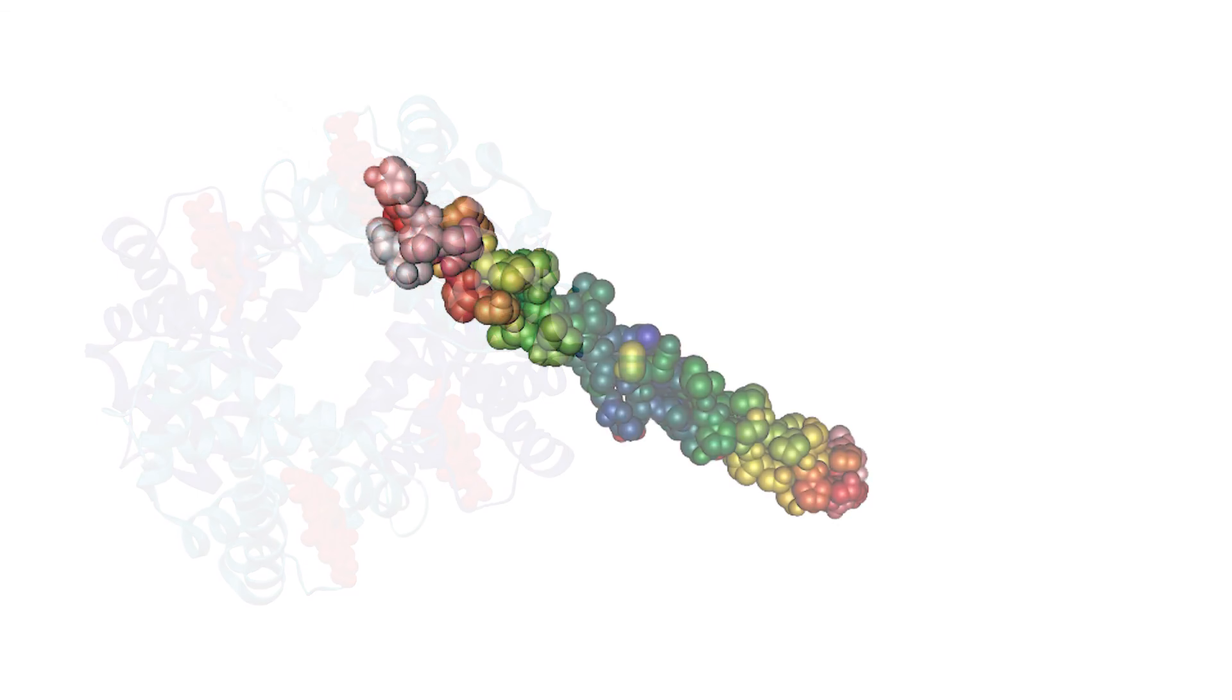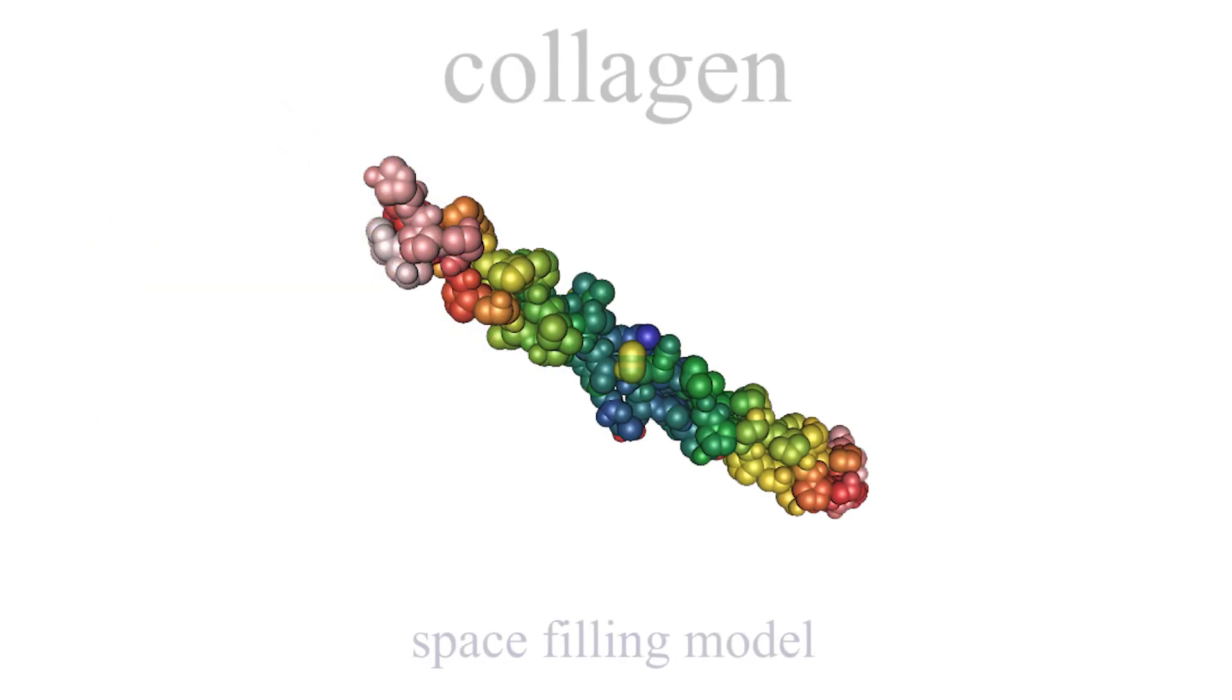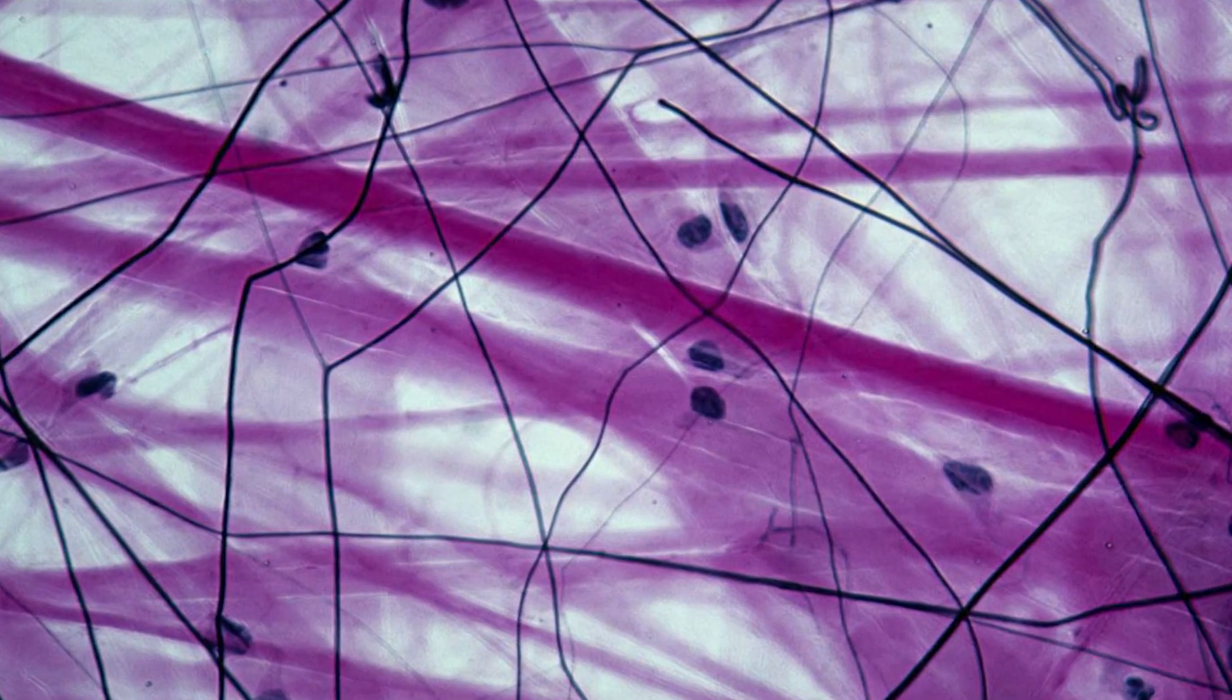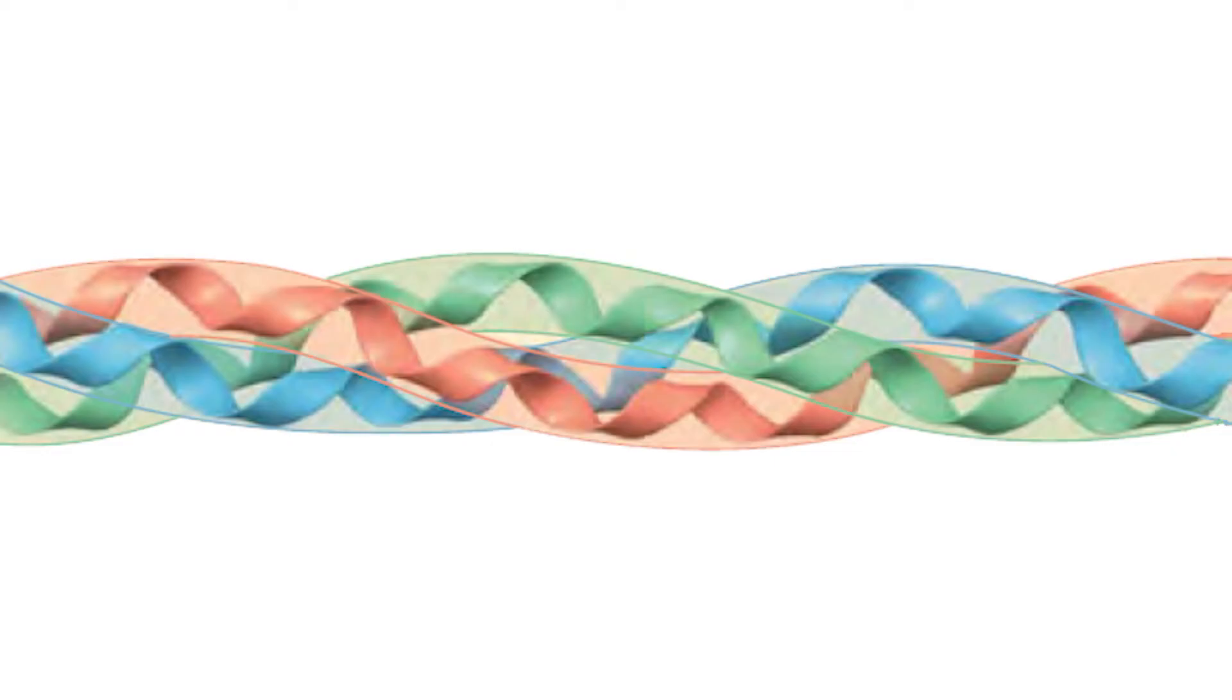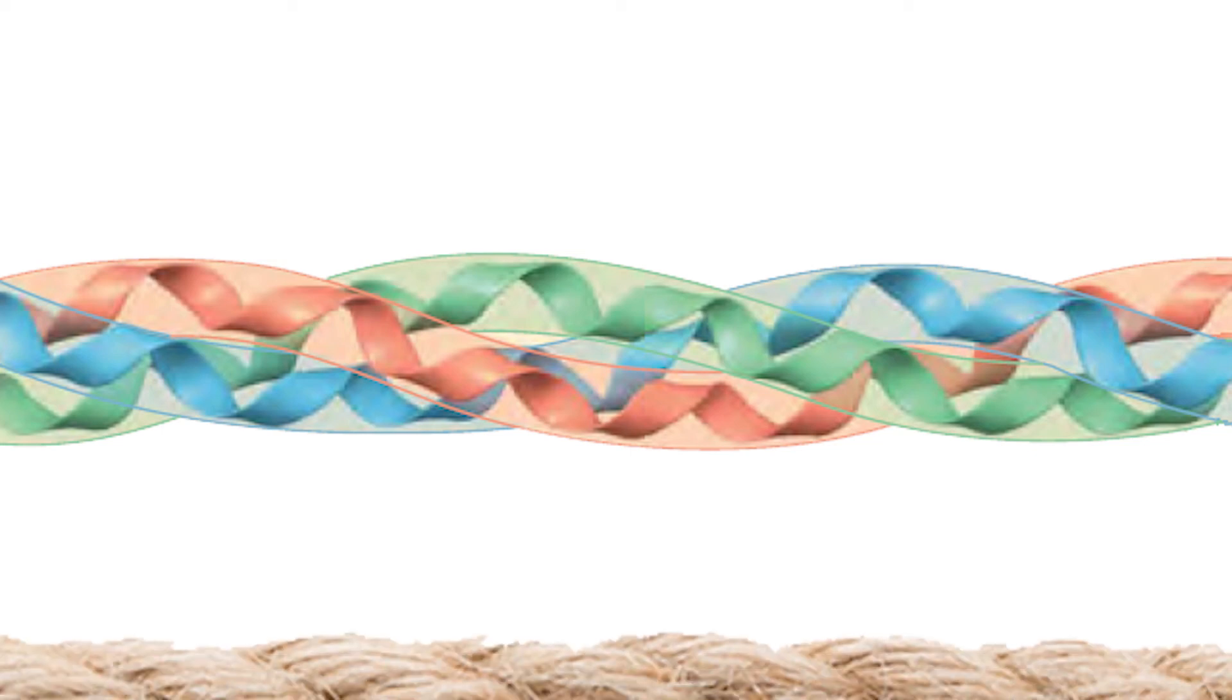Another example of structure determining function would be in collagen. Collagen is a fibrous protein that is the main component of connective tissue. Three long helical polypeptides intertwine with each other to form collagen, giving it great strength due to this rope-like structure.